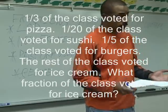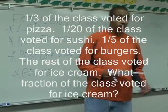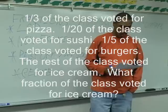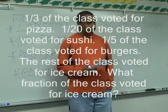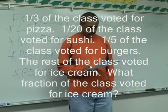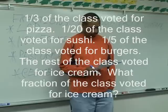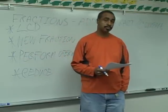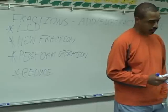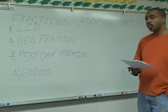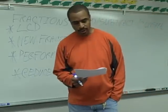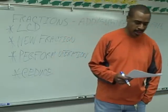One-third of the class voted for pizza. One-twentieth of the class voted for sushi. One-fifth of the class voted for burgers. The rest of the class voted for ice cream. So: one-third voted for pizza, one-twentieth voted for sushi, one-fifth voted for burgers, and the rest voted for ice cream.